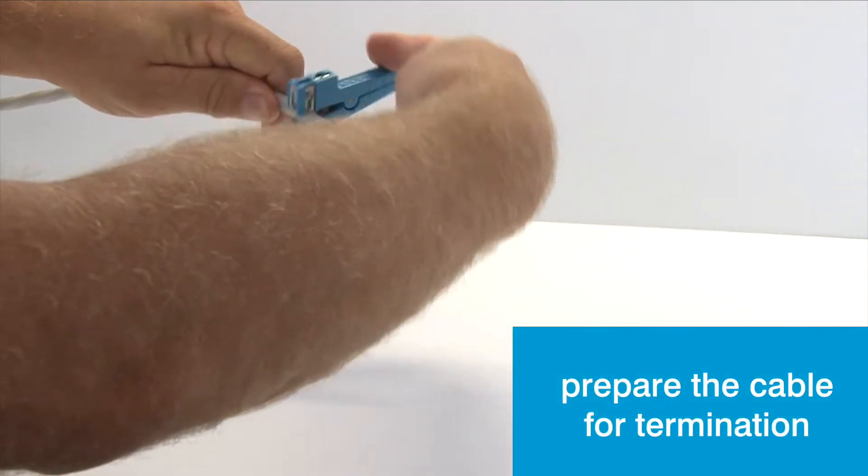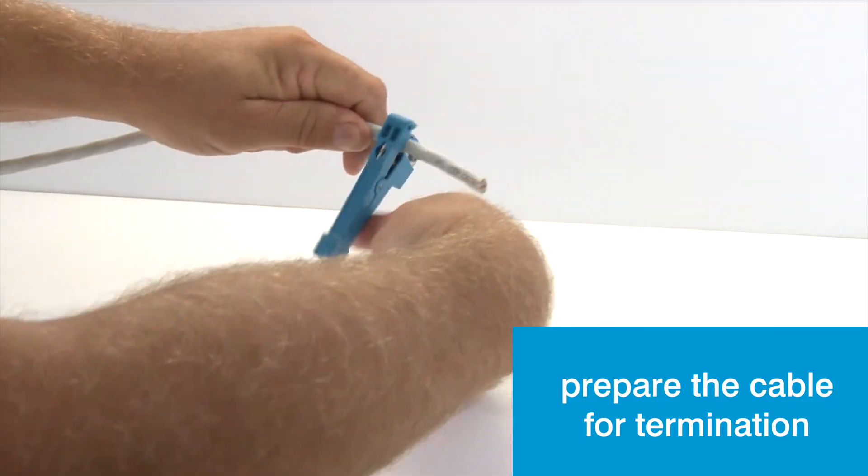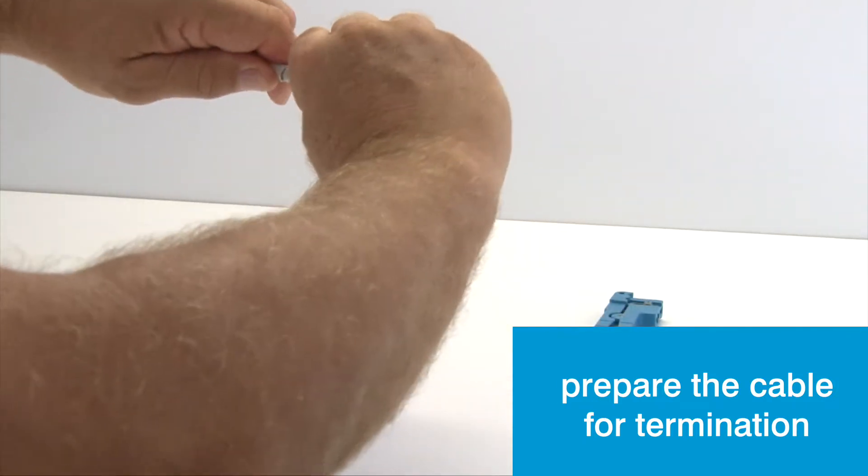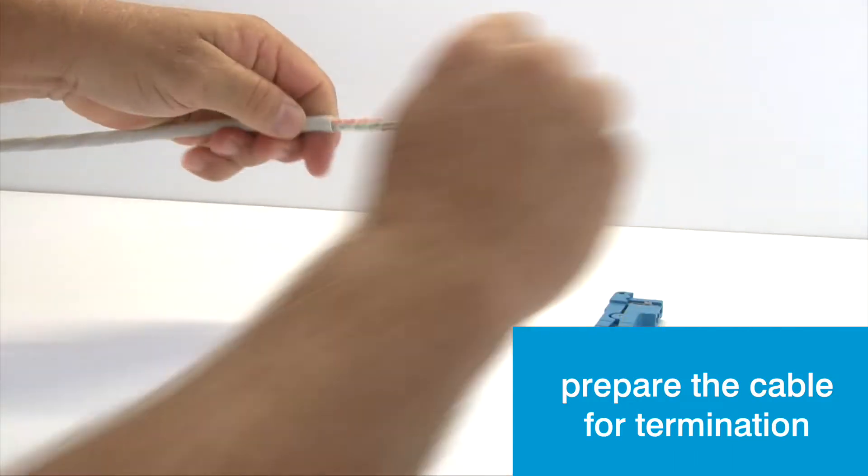The first step is to prepare the cable for termination by removing at least 40mm of the sheath to expose the pairs.